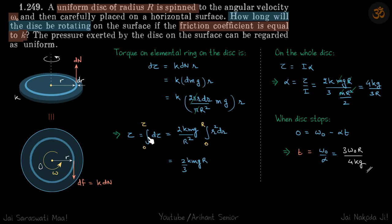Now we will just integrate both sides, and R will vary from zero to capital R, which will give the value of torque to be 2 by 3 KMGR, which comes to be constant.